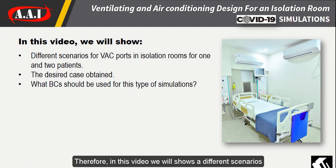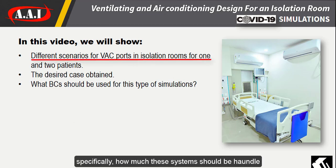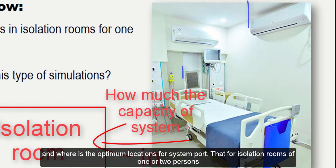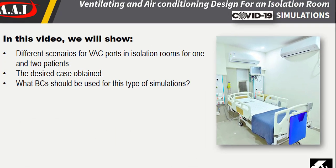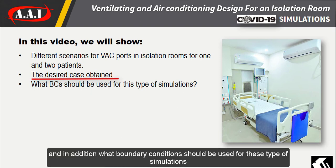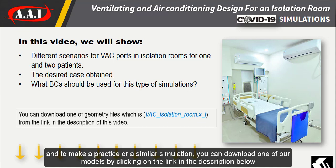In this video, we will share different scenarios for ventilating and air conditioning — specifically how much these systems should be handled and where the optimum locations for system ports are, for isolation rooms of one or two persons. Also, which is the desired case obtained and what boundary conditions should be used for this type of simulation. To make a practice or similar simulation, you can download one of our models by clicking on the link in the description below.